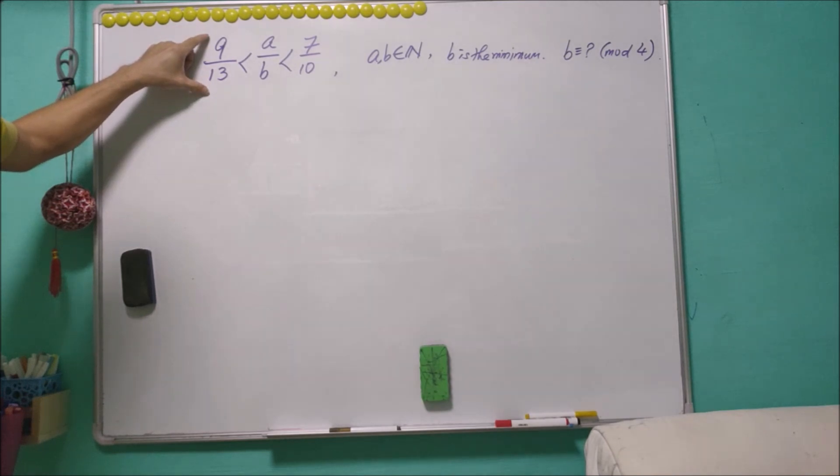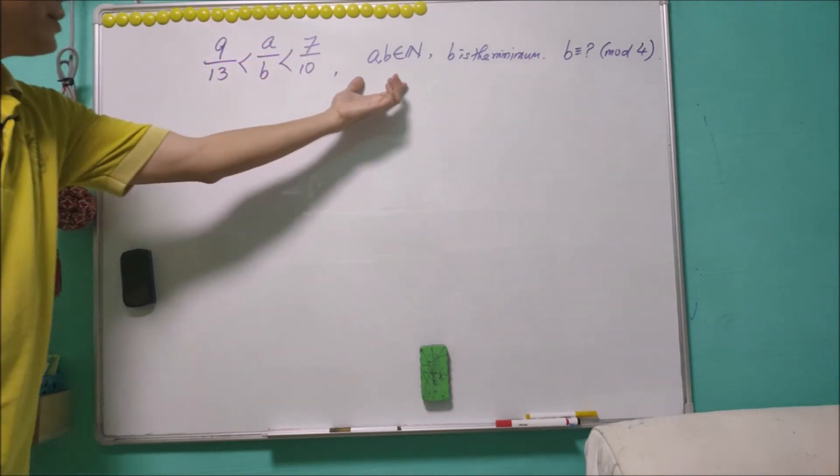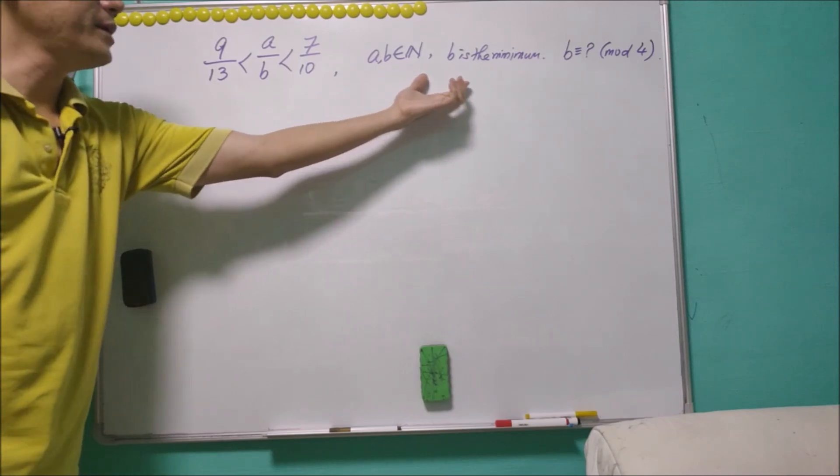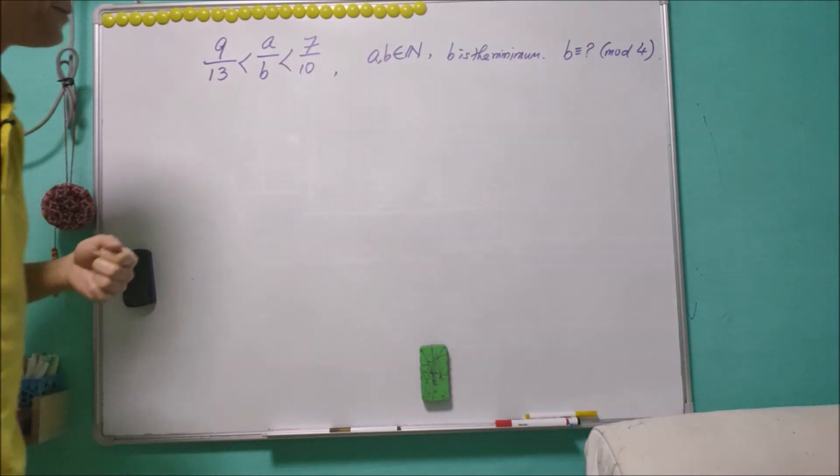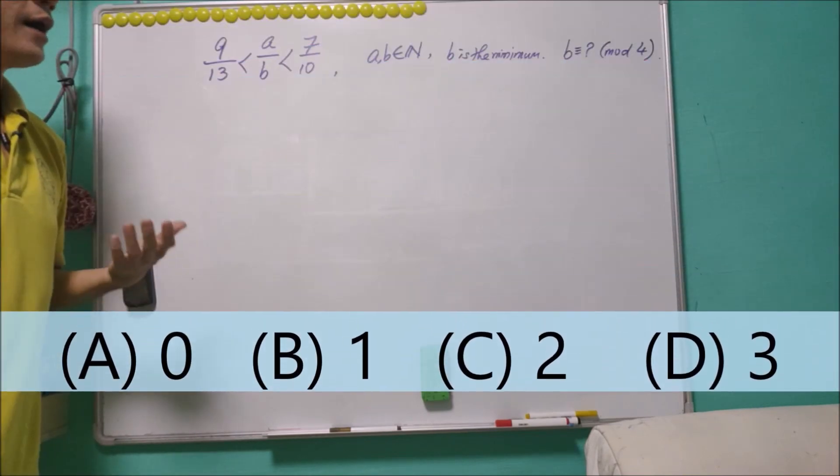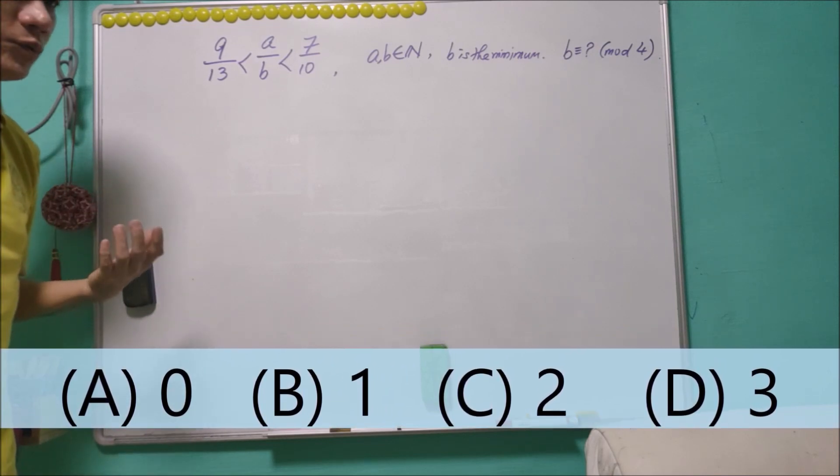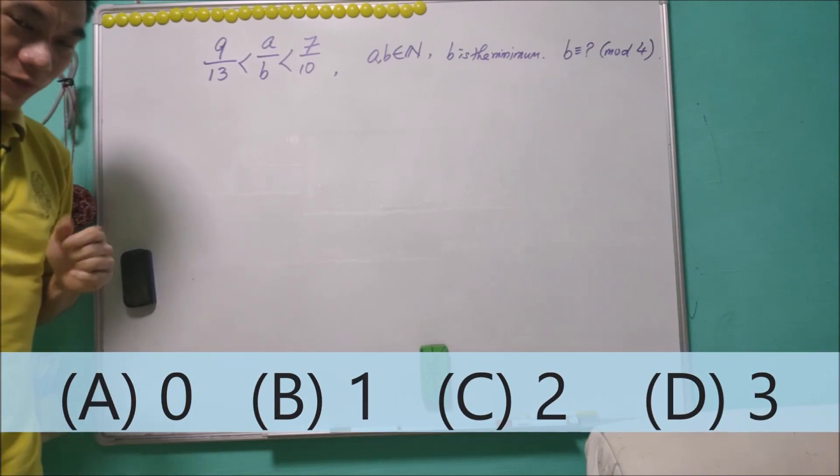Given that 9/13 < a/b < 7/10, where a and b are positive integers and b is the minimum, what is the remainder when b is divided by 4? Obviously the answer can only be 0, 1, 2, or 3. What do you think?